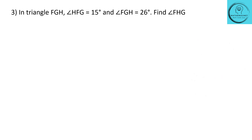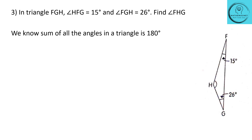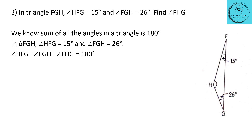Question 3: in triangle FGH, angle HFG equals 15 degrees and angle FGH equals 26 degrees. Find angle FHG. We know the sum of all angles in a triangle is 180 degrees. So angle HFG plus angle FGH plus angle FHG equals 180 degrees. The unknown angle FHG equals 180 minus 15 minus 26 degrees, which is equal to 139 degrees. So the unknown angle FHG is equal to 139 degrees.